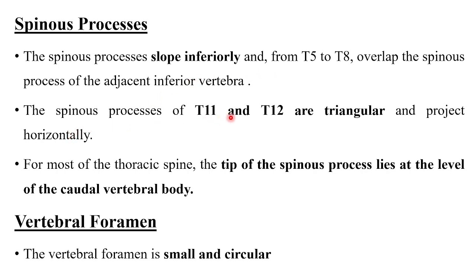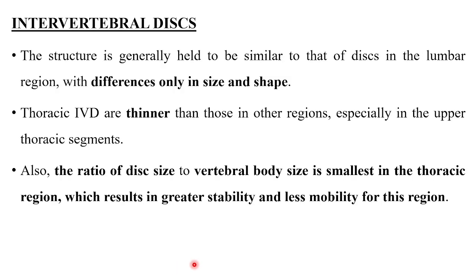The spinous processes of T11 and T12 are triangular and project horizontally. For most of the thoracic spine, the tip of the spinous process lies at the level of the caudal vertebral body. The vertebral foramen is small and circular in the thoracic region, smaller than in the cervical and lumbar vertebrae.